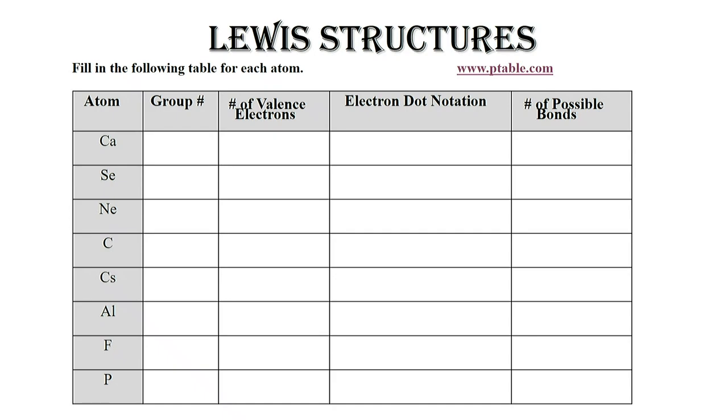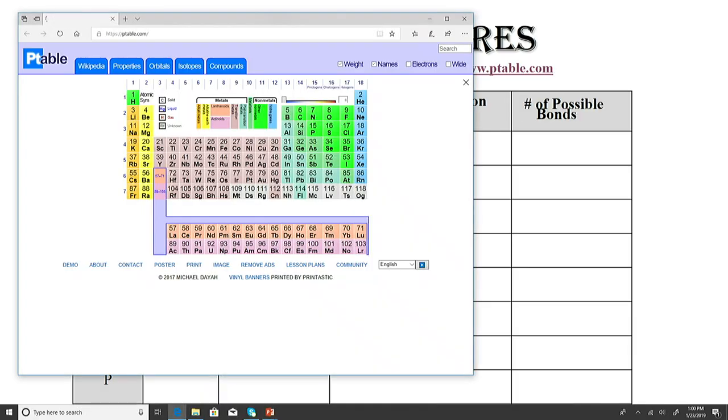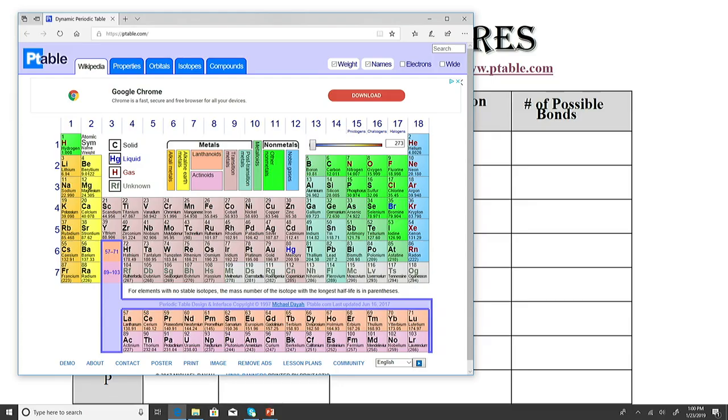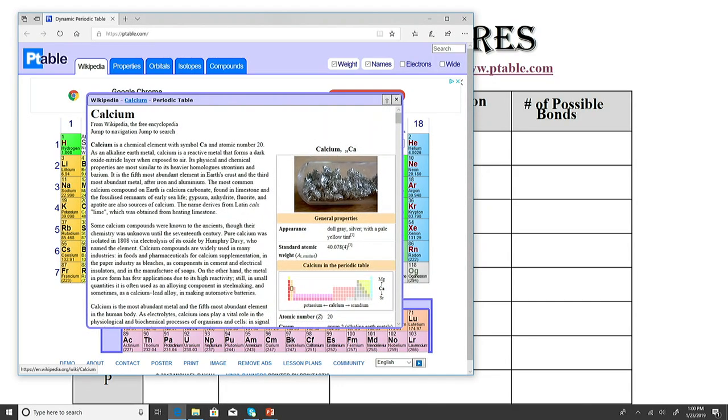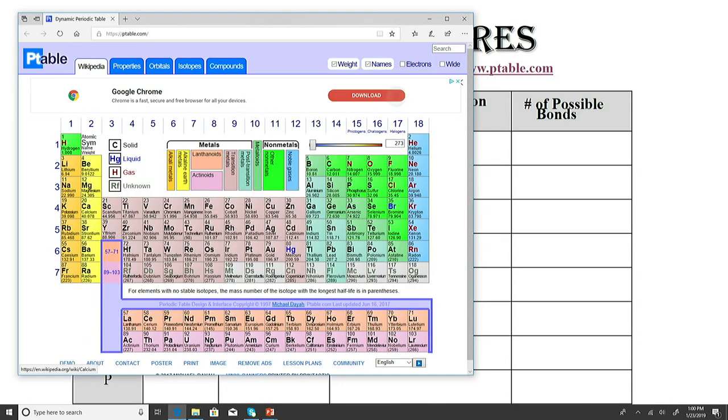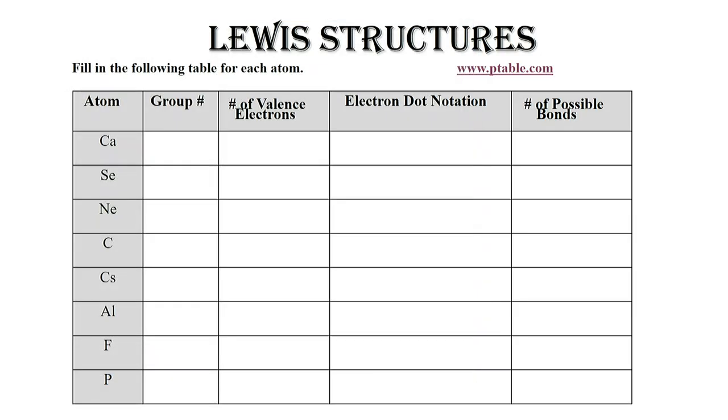Let's take a look at calcium first. Let's find calcium on the periodic table. Calcium is here on the periodic table. Notice that it is in group two. So because it is in group two, it will have two valence electrons. When we draw an atom that has two valence electrons...